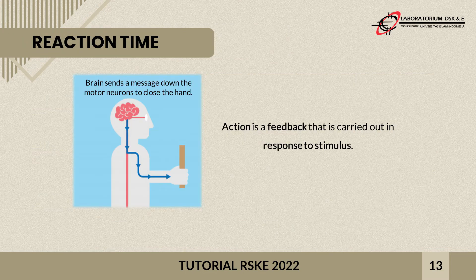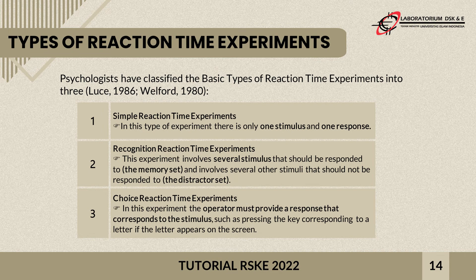Action is a feedback carried out in response to a stimulus. The basic types of reaction time experiments are: first, simple reaction time experiments, where there is only one stimulus and one response; second, recognition reaction time experiments, involving several stimuli to be responded to (memory set) and several stimuli that should not be responded to (distractor set); and third, choice reaction time experiments, where the operator must provide a response corresponding to the stimulus, such as pressing the key corresponding to a letter that appears on the screen.